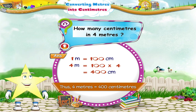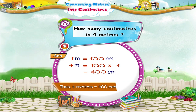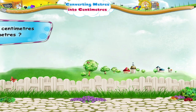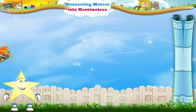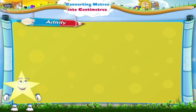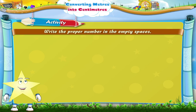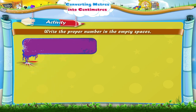Very good Starry! You have learnt to convert meters into centimeters. Now let us do a nice activity. Write the proper number in the empty spaces. 3 meters equals dash into dash, which equals dash centimeters. 3 meters equals 3 into 100, which equals 300 centimeters.